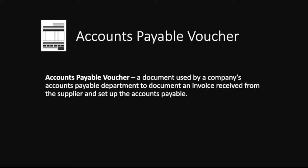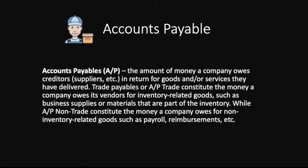The next term is accounts payable voucher — basically a document used by a company's accounts payable department to document an invoice received from the supplier and set up the accounts payable. For example, if you issue a purchase order and goods are delivered, they come with a supplier invoice. You record that invoice through a document called an accounts payable voucher, entering the nature of the transaction, the accounting entry, and the setup of accounts payable and its corresponding expense accounts.